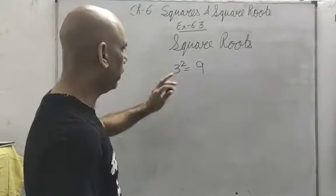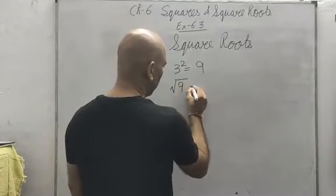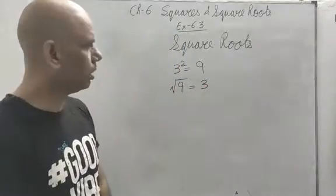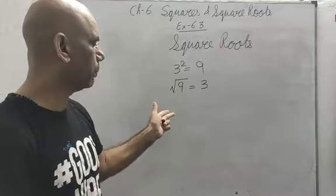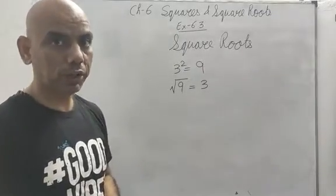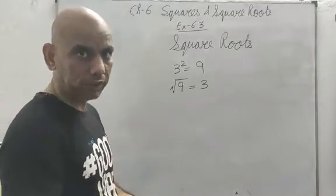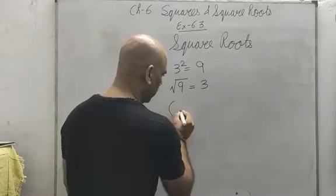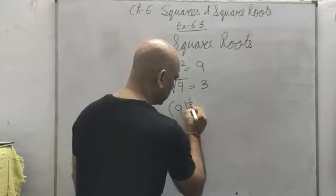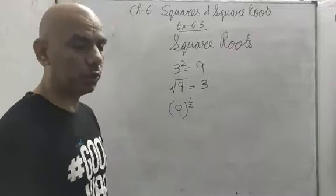The symbol of square root — the square root of 9 is 3. In exponent and power, which you have studied in class 7, square root symbolizes 1 by 2 power.